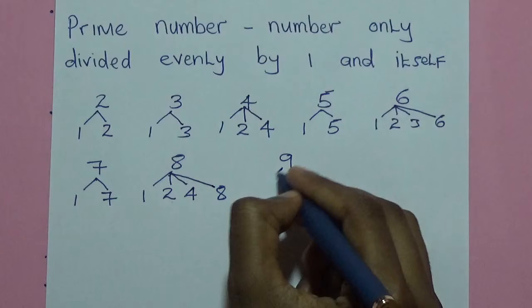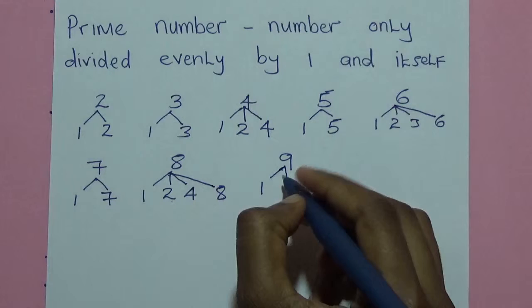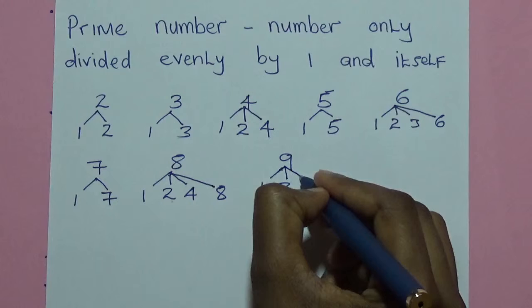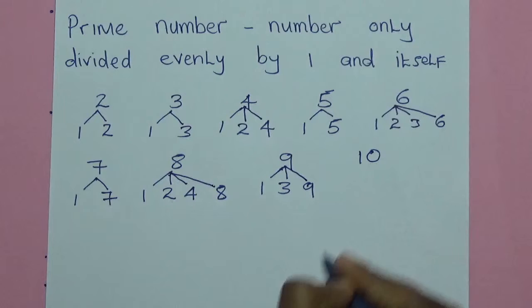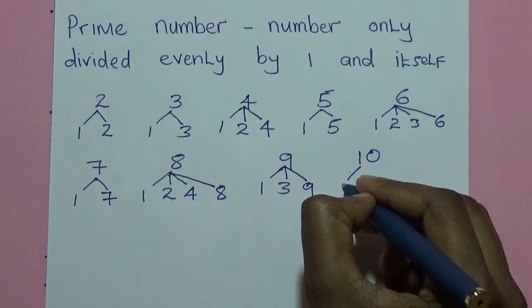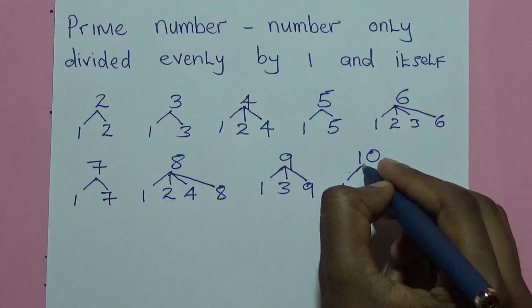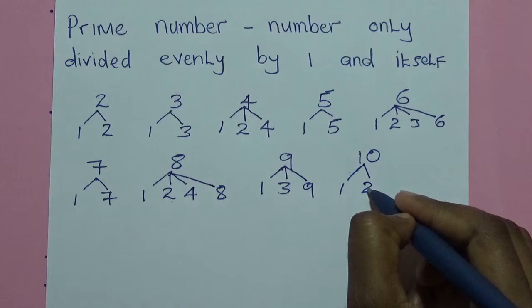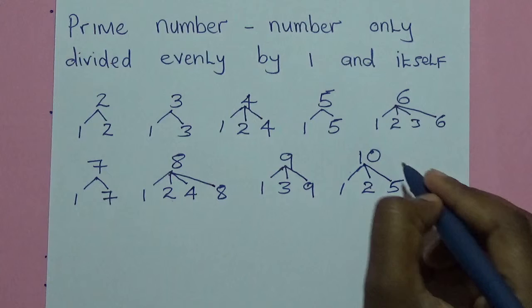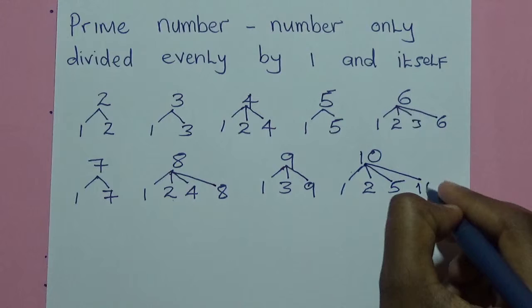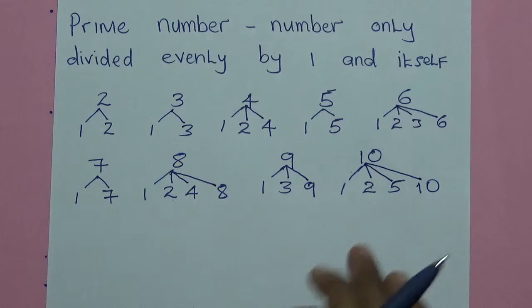The next number is 9. 9 can be divided by 1. It can also be divided by 3 to get 3, and finally it can be divided by itself which is 9 to get 1. Then we go to the next number which is 10. The numbers which can divide 10 include 1 — 10 divided by 1 will be 10. It can also be divided by 2 because 10 divided by 2 will be 5, and by itself which is 10 because 10 divided by 10 will be 1.